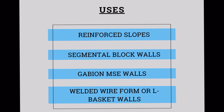Typical uses include reinforced slopes, segmental block retaining walls — which are also known as MSE walls and slopes — gabion MSE walls, and welded wire form or L-basket walls.